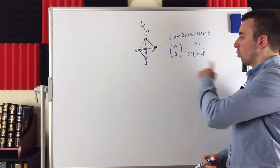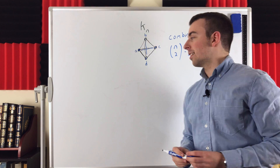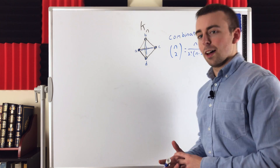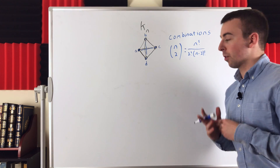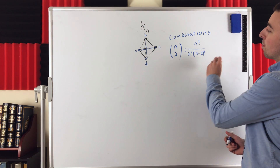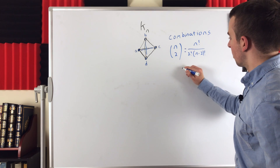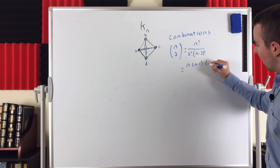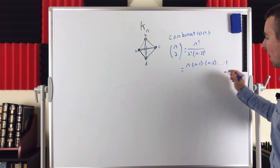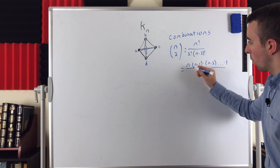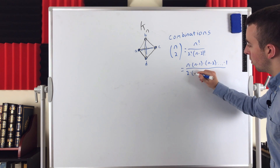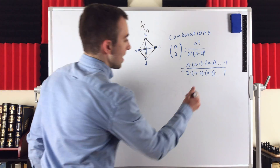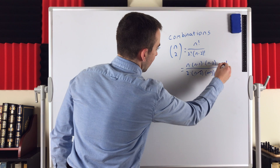If you're familiar with combinations and why this formula works, this should seem fairly beautiful. In the numerator we've got n factorial, which is n times n minus 1 times n minus 2, and so on, all the way down to 1. In the denominator we've got 2 factorial — which is just 2 — multiplied by n minus 2 factorial. You can see there's going to be a lot of cancellation: the n minus 2s cancel out, the n minus 3s, all of those terms cancel out.